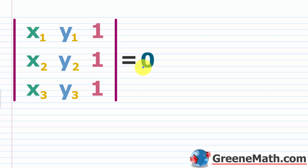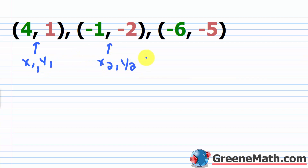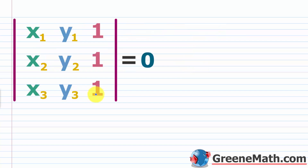Let's use this and look at an example. We're given three points and we want to test for collinearity: (4, 1), (−1, −2), and (−6, −5). Label them as x₁, y₁; x₂, y₂; and x₃, y₃. It doesn't matter which gets labeled as which. The third column of the matrix is always 1s, and everything else goes in order — x₁, y₁ in row 1; x₂, y₂ in row 2; x₃, y₃ in row 3. It's very easy to remember.